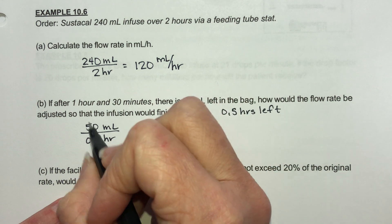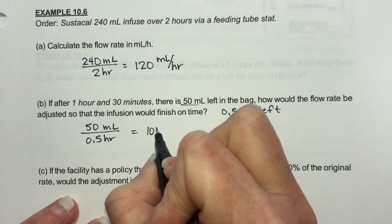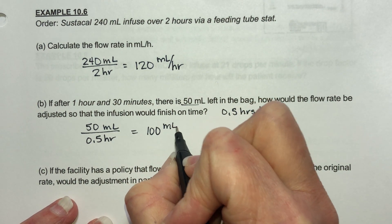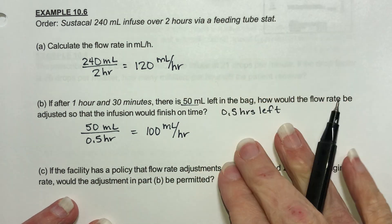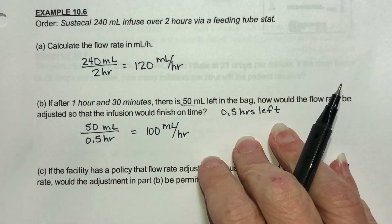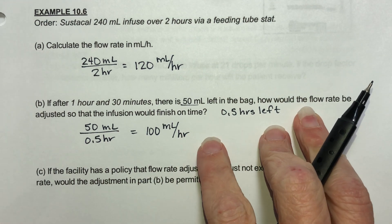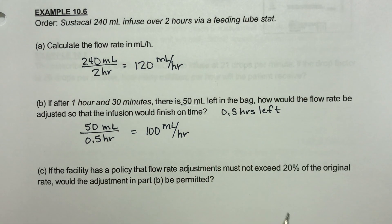So the flow rate would be adjusted to 50 milliliters over 0.5 hours. When you do this calculation, you get 100 milliliters per hour. So if you came in and realized you wanted to end on time and you were a little bit ahead, you slow it down a little bit.